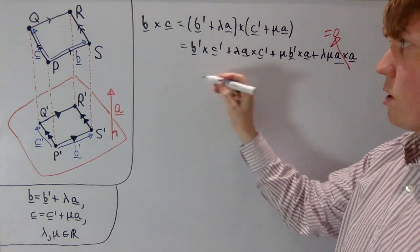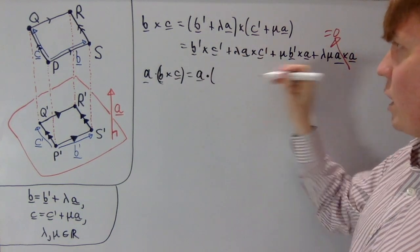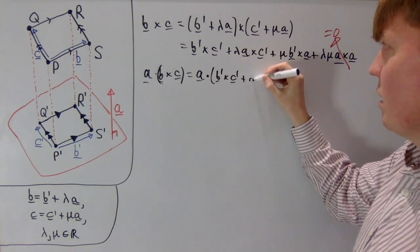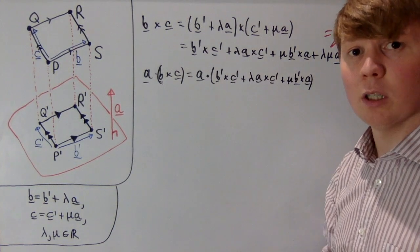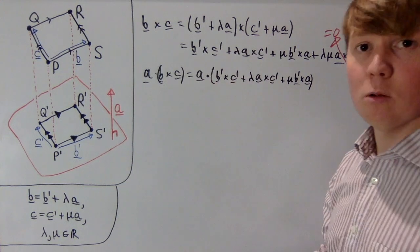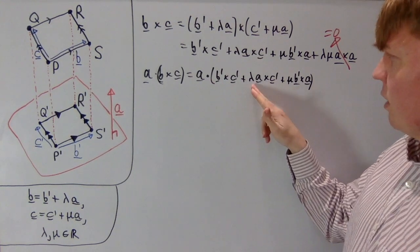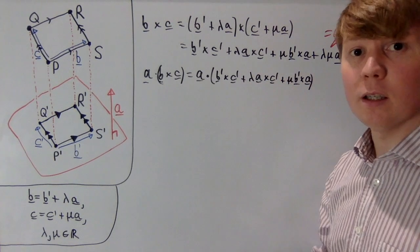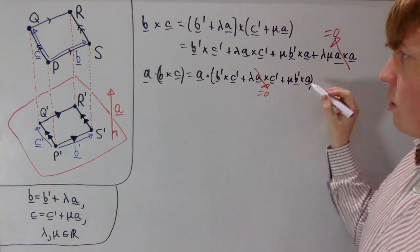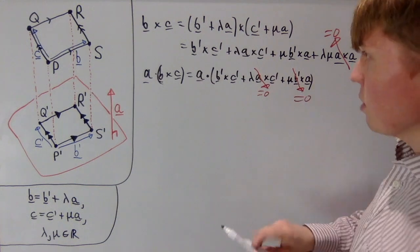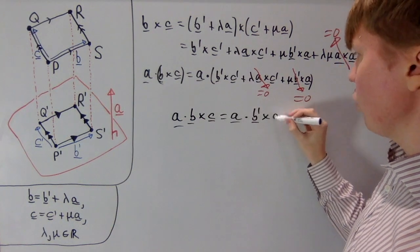Taking the dot product of a with b cross c, we get a dot (b prime cross c prime) plus lambda times a dot (a cross c prime) plus mu times a dot (b prime cross a). Now a cross c prime is orthogonal to a, so that dot product gives zero. Similarly, b prime cross a is orthogonal to a, so that term also vanishes. We can therefore conclude that a dot (b cross c) equals a dot (b prime cross c prime).